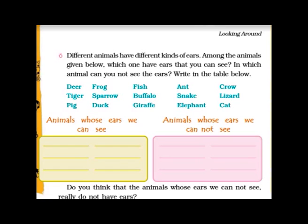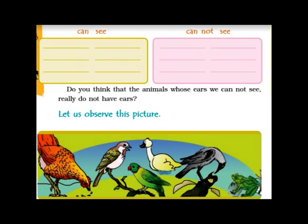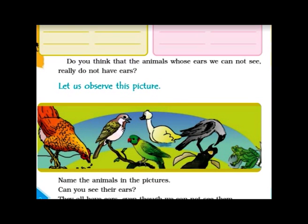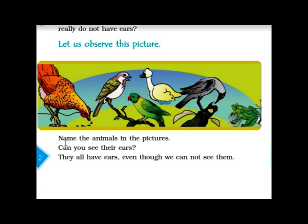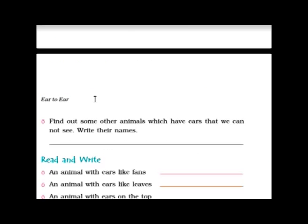Do you think animals whose ears we cannot see really do not have ears? The question is: can those animals hear or not? Here is a picture of hen, birds, duck, and crow. Can you see their ears? No, we cannot see their ears. Find out — they all have ears even though we cannot see them. These birds can listen, though we cannot see their ears.